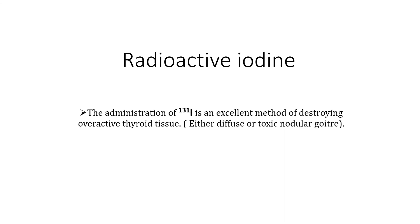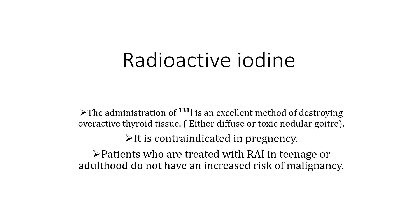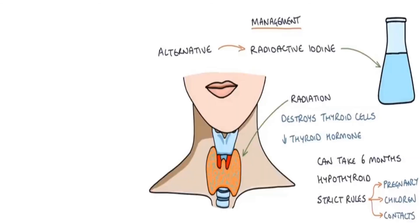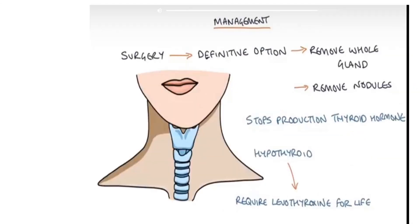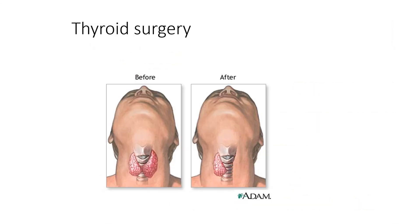Radioactive iodine destroys the gland from inside and is contraindicated in pregnancy. In teenagers or adults without increased malignancy risk it is an accepted treatment, but caution is required regarding pregnancy, children, and contacts for two weeks. Surgery involves removing part or all of the gland — a nodule, subtotal thyroidectomy (half the gland), or total thyroidectomy — after which the patient requires levothyroxine for life.